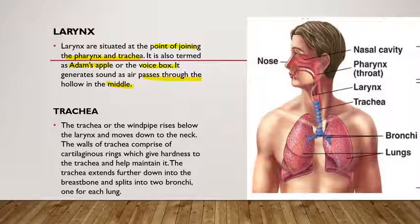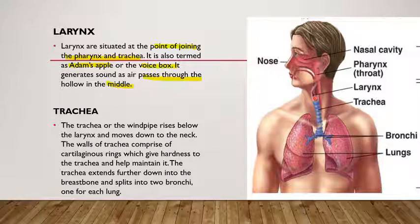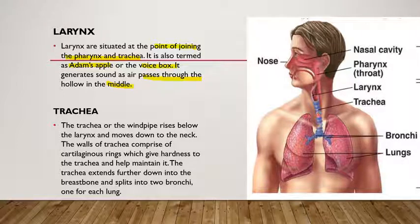The larynx generates sound as air passes through the hollow in the middle, causing vibration. That is why the larynx is called the voice box or sound box, and its shape and location are why it is also called Adam's apple.